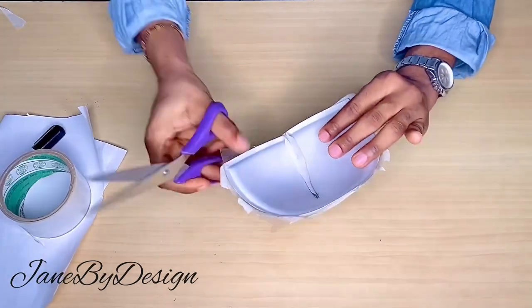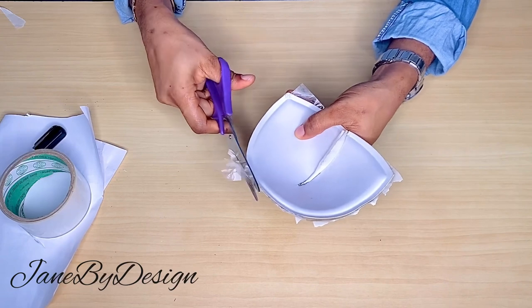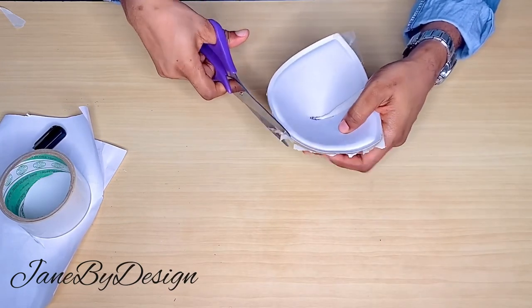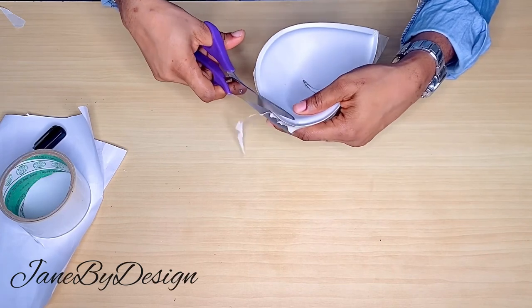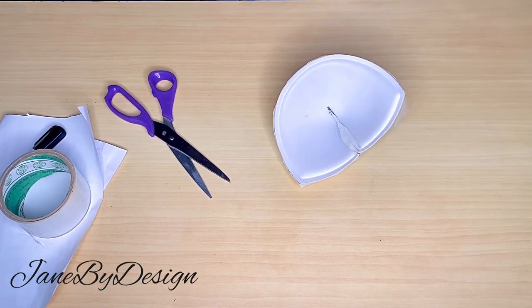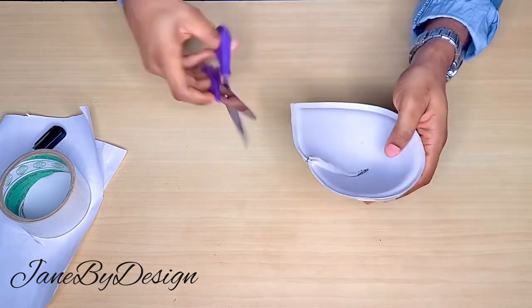So guys, now that we are done layering the tape on top of each other, we are going to go ahead and cut out those excesses we have at the edge of our bra core. We don't need that. So we are going to be cutting those excess tape at the edges. Now after that, what we will do next is to take our marker.